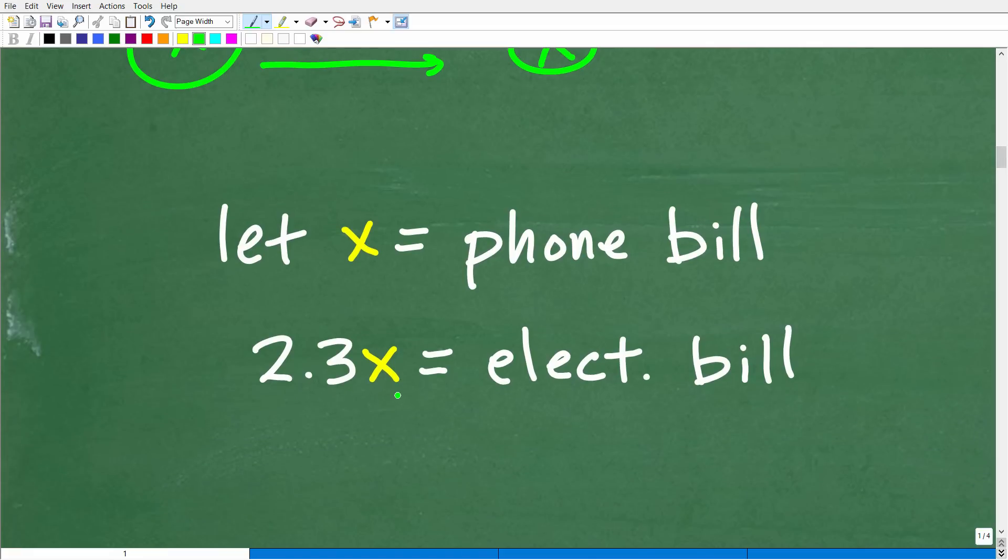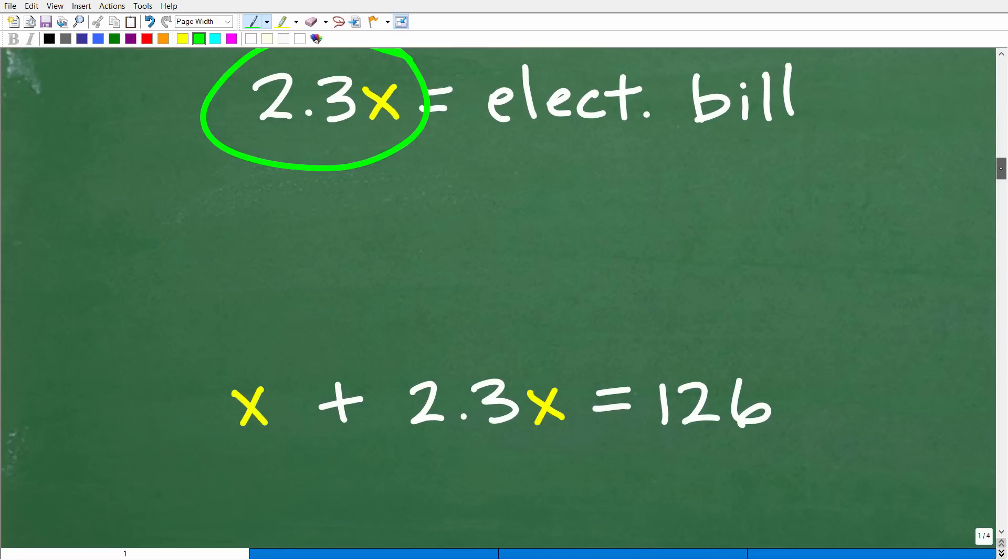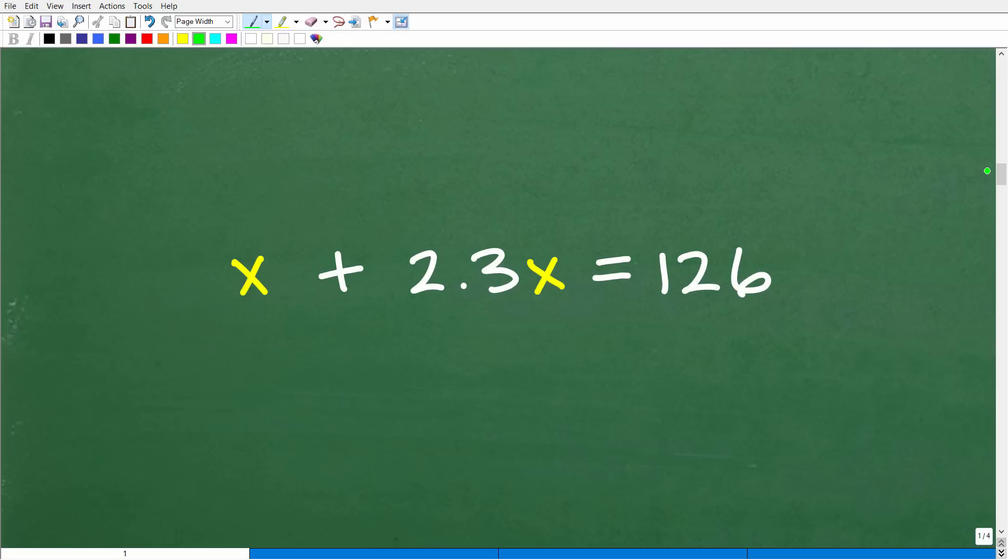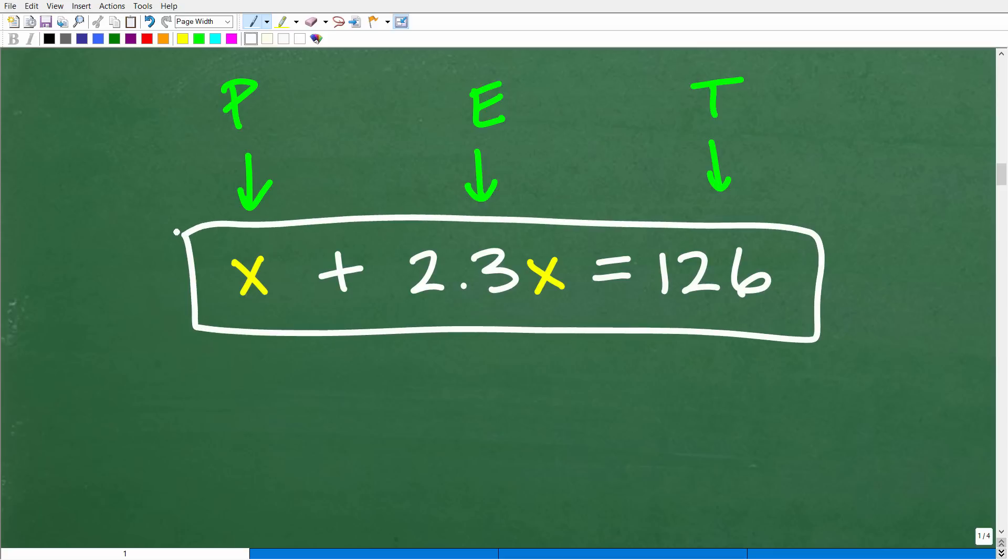So remember, the electric bill is going to be 2.3 times the phone bill. So we'll let the variable x represent the phone bill. Okay, so if that's the case, then 2.3x, which, of course, is the amount of the phone bill, is the electric bill. And here we have two expressions, this expression or this variable expression x and 2.3x. These are how much these two individual bills cost. But, of course, we don't know the exact amount. So we're going to have to figure out how to solve for those variables, which, of course, is constructing an equation. Okay, so here is the phone bill plus the electric bill. All right, so we'll put this right here. Phone bill plus the electric bill. We know the total is $126.